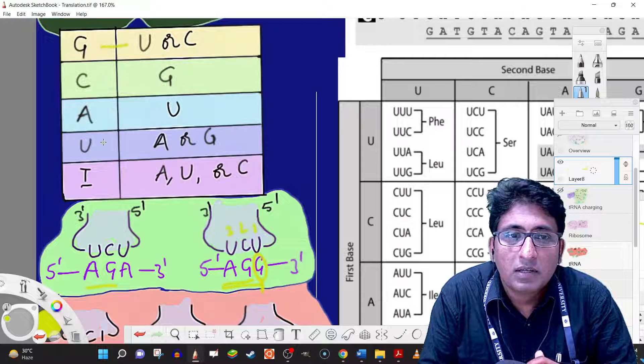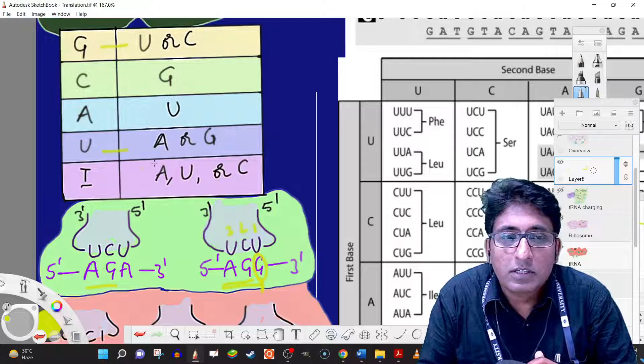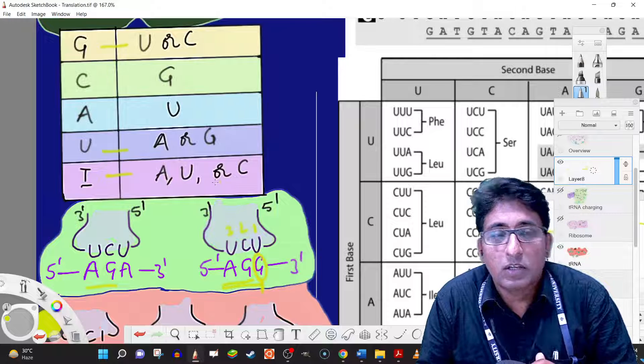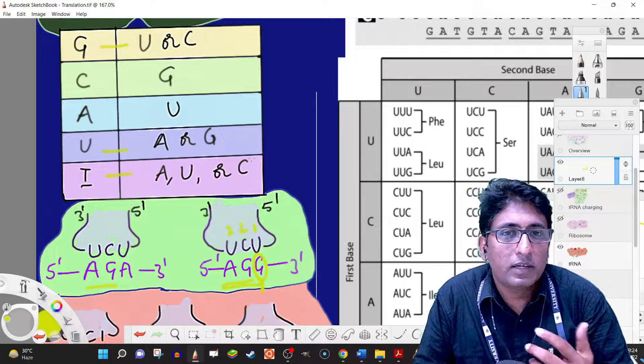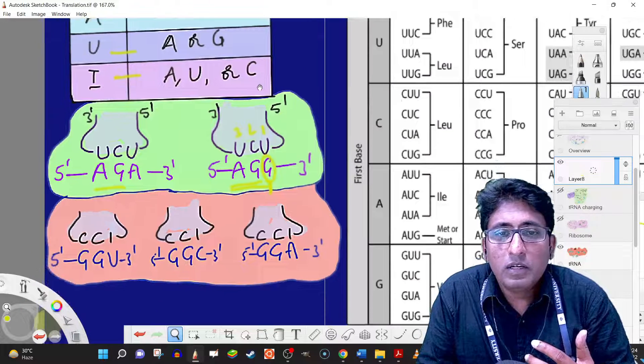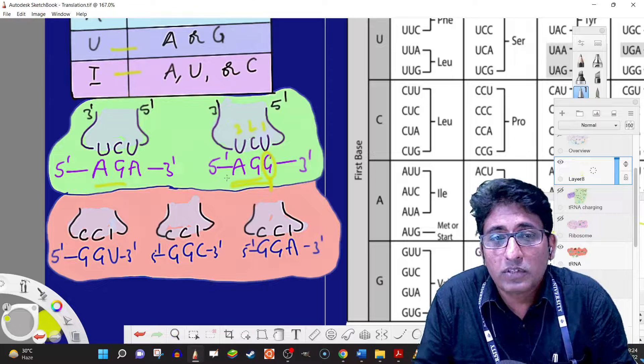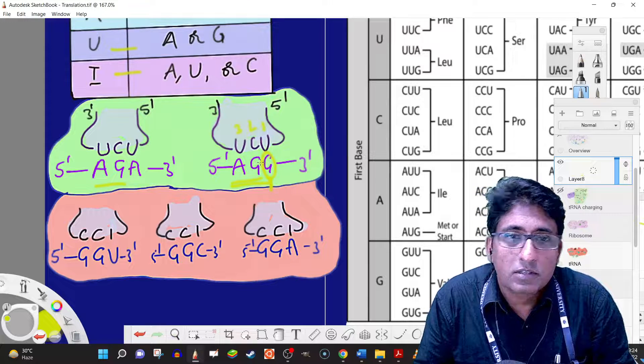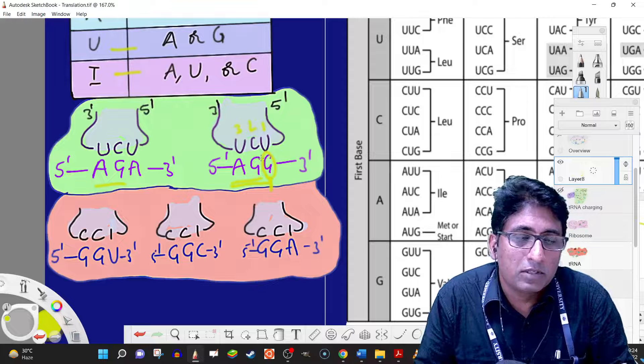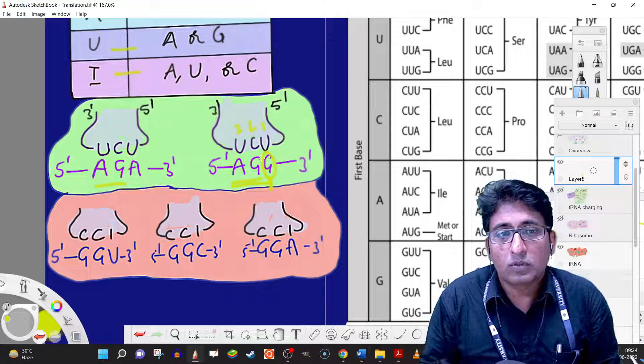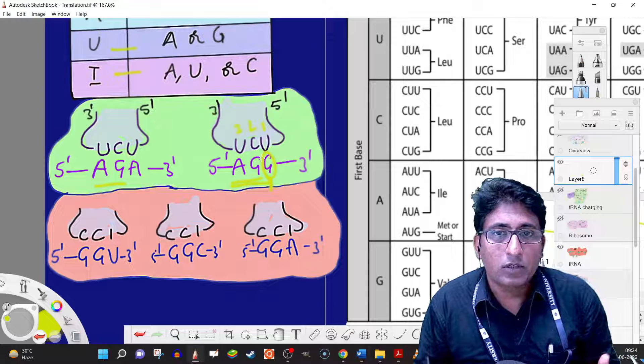G base pairs with U or C, U base pairs with A or G, and inosine base pairs with A, U, or C. You don't need four different tRNA molecules; you just need one tRNA that can recognize both AGA and AGG codons.